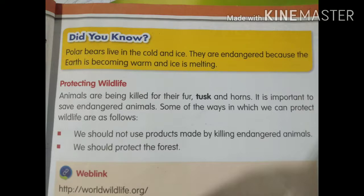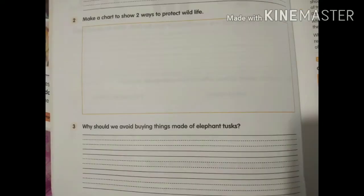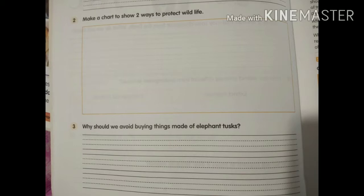Now take your workbook and open page number 32. Write the date. The topic is 'Protect Wildlife.' First question: Why do humans kill animals? Write the answers — for their body parts like tusks and fur. Second question: Make a chart to show two ways to protect wildlife and write any two ways of your own. Third question: Why should we avoid buying things made of elephant tusks? Write your own answers.